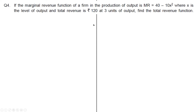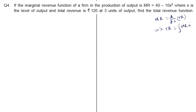Here the marginal revenue is given; we need to find the total revenue where x is the level of output, and total revenue is rupees 120 at 3 units. A similar question was asked in the sample paper for term 2 for 2 marks. We know marginal revenue is the derivative of total revenue, so total revenue is the integral of marginal revenue dx.